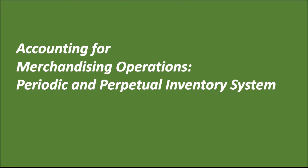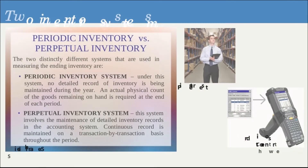Hello everybody. Today we will be discussing accounting for merchandising operations, focusing on two different types of inventory systems: the periodic inventory system and the perpetual inventory system. Before anything else, please download Handout 030, which relates to periodic and perpetual inventory systems. The link is available in the description box.